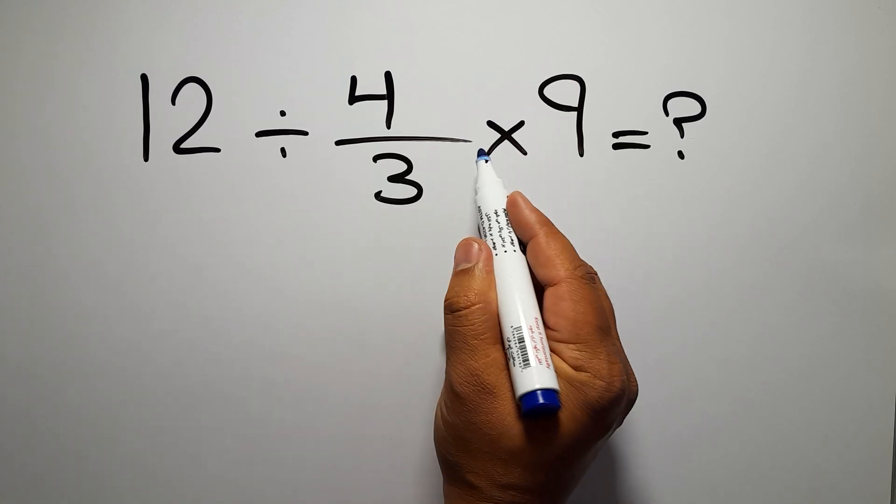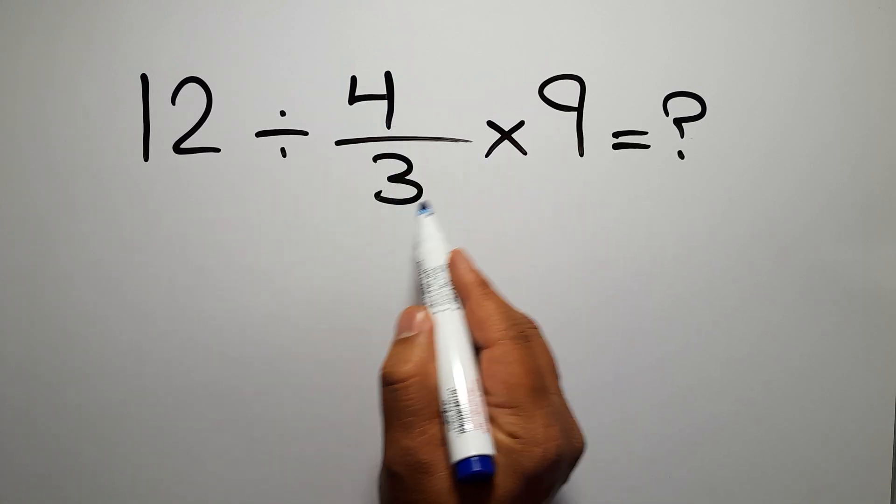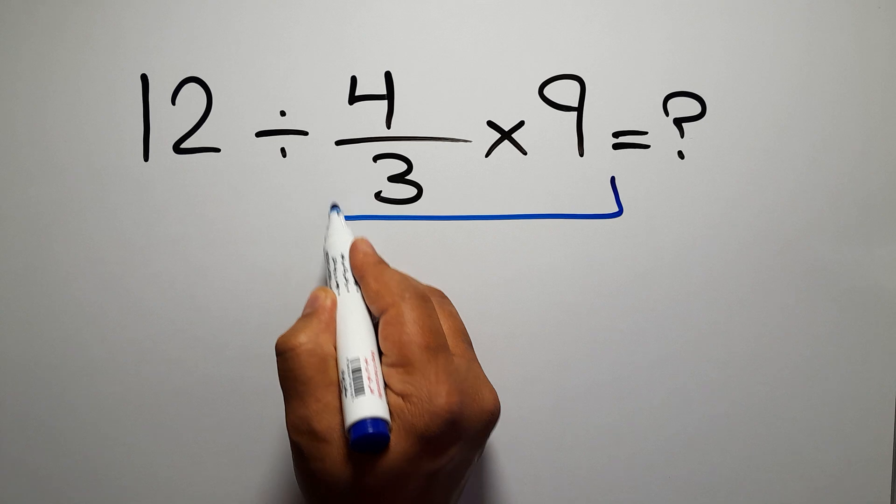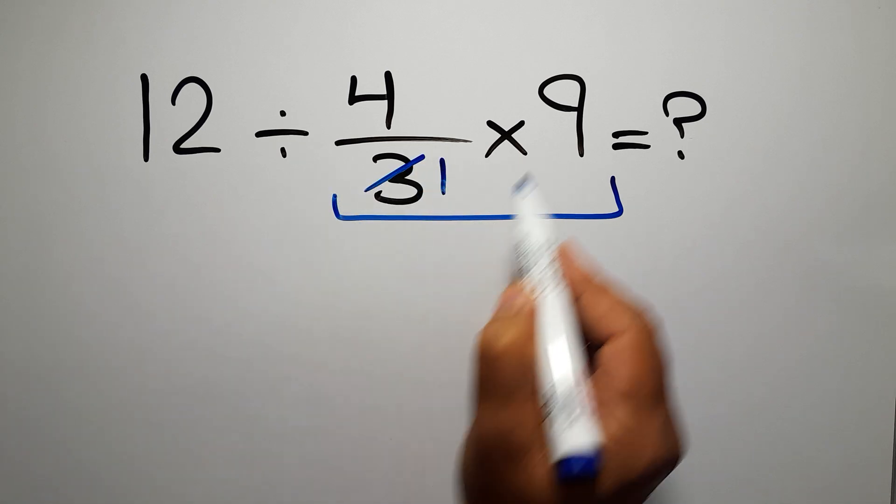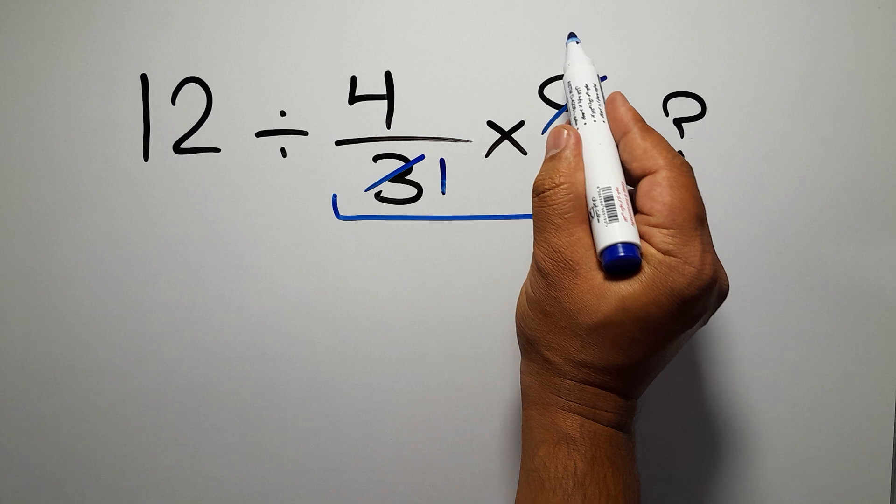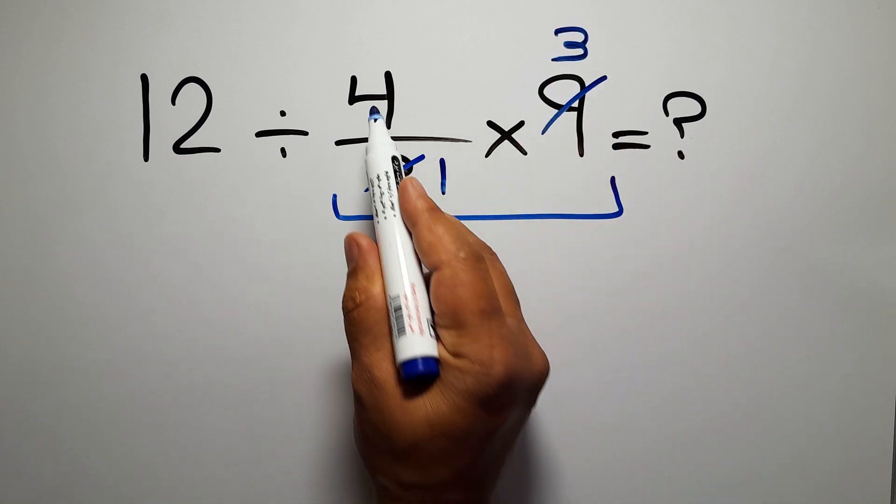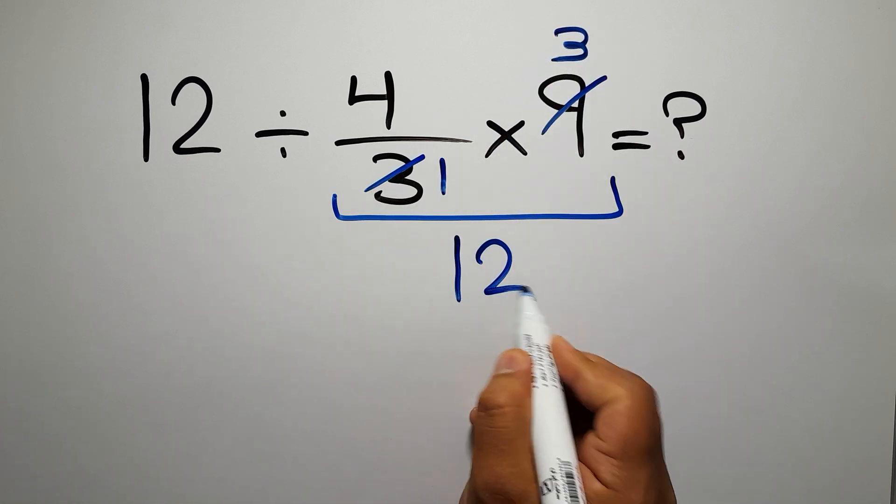First, let's do this multiplication. 4 over 3 times 9. 3 divided by 3 gives us 1, and 9 divided by 3 gives us 3. So 4 times 3 is just 12.